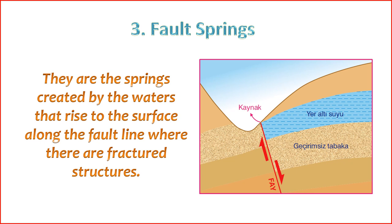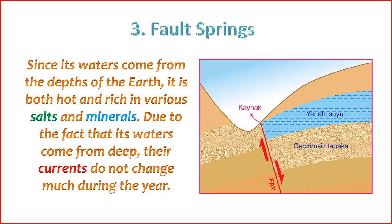7. Human Utilization — in some cases, fault springs are tapped as water sources for human use. However, their use may be limited by factors such as water quality, quantity, and the potential for contamination from surrounding geological materials. Understanding fault springs is important for both geological studies and water resource management, as they are influenced by the dynamic processes occurring beneath the Earth's surface. Given that its waters originate from the Earth's depths, the spring is characterized by both high temperatures and a rich composition of diverse salts and minerals.